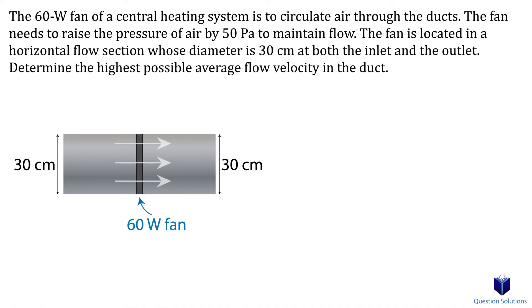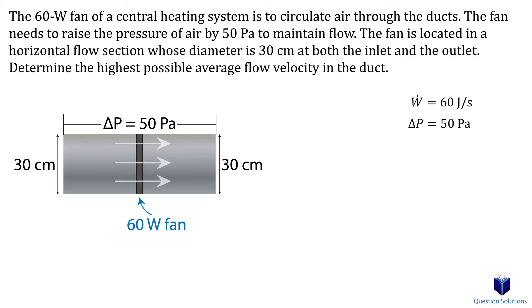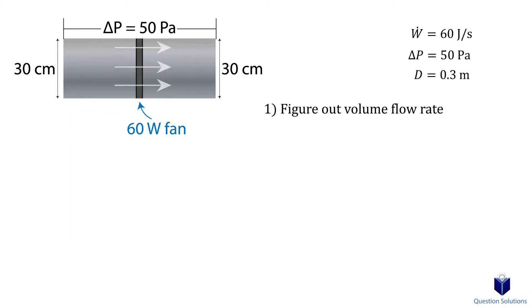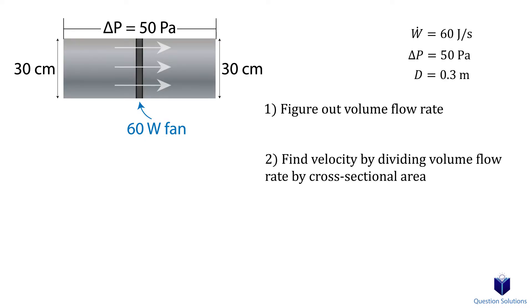Let's look at a problem where we have a 60-watt fan that circulates air through ducts. To keep the flow going, the fan needs to raise the pressure of the air by 50 pascals. We need to find the highest possible average flow velocity in the duct. The power of the fan is 60 watts — that's energy going in, which we can write as joules per second, since 1 watt is 1 joule per second. We also have the pressure difference delta P of 50 pascals, and the flow section has a diameter of 30 centimeters or 0.3 meters. We first need to figure out the volume flow rate, and once we have that, we can find the velocity by dividing the volume flow rate by the cross-sectional area.